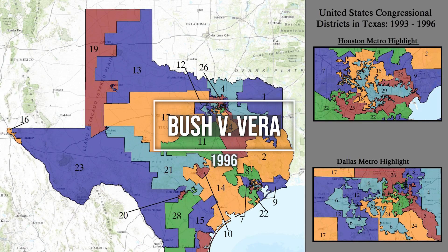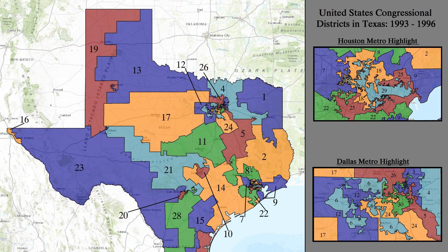Bush v. Vera was a 1996 United States Supreme Court case that challenged the constitutionality of a Texas redistricting plan. The plan had been drawn up after the 1990 census and had been designed to increase the number of minority representatives in the state legislature by creating new minority-majority districts in Dallas and Houston to better represent the census and grant more voting power to minority populations growing in these cities. However, the Supreme Court found that the redistricting plan had been drawn along racial lines and was therefore unconstitutional.